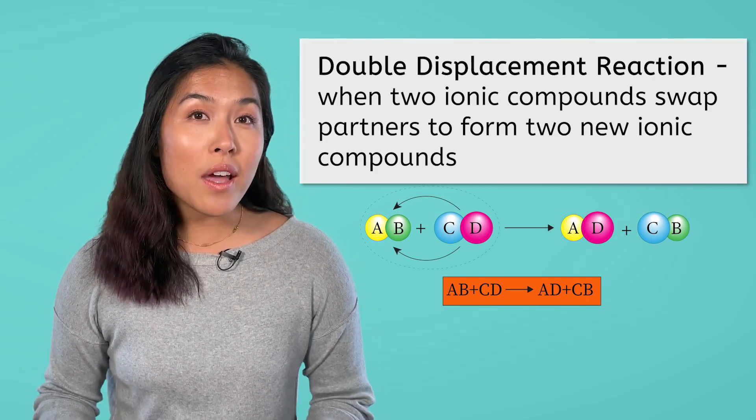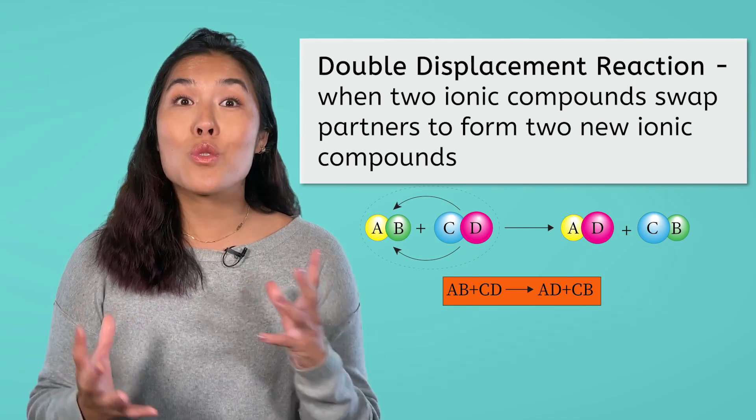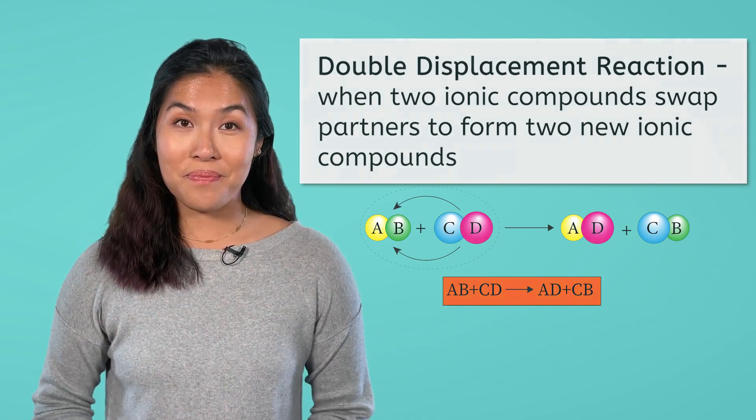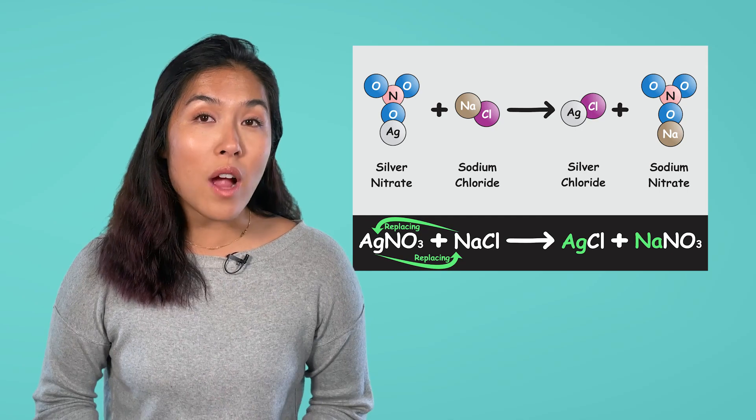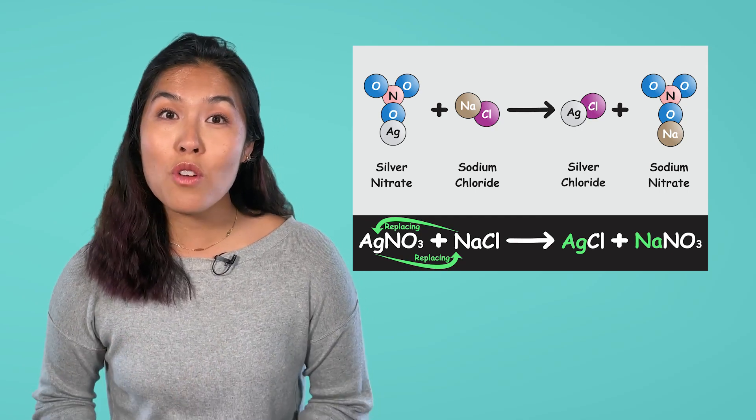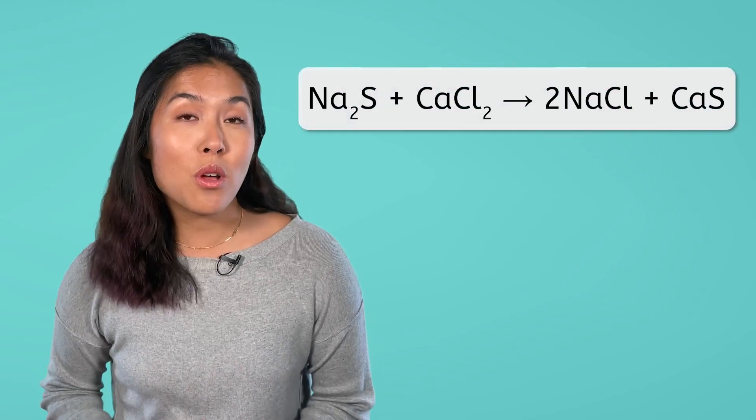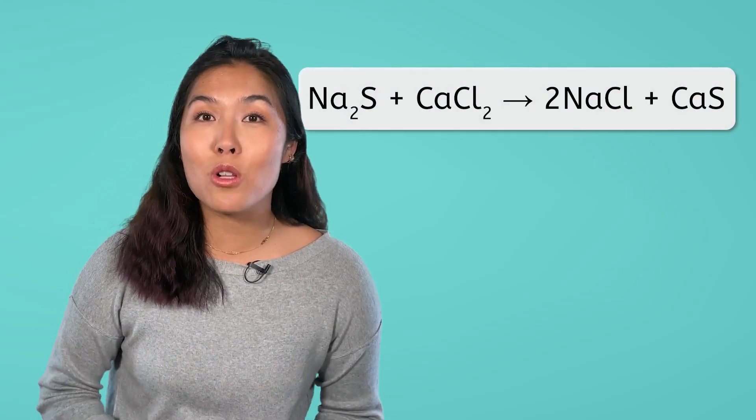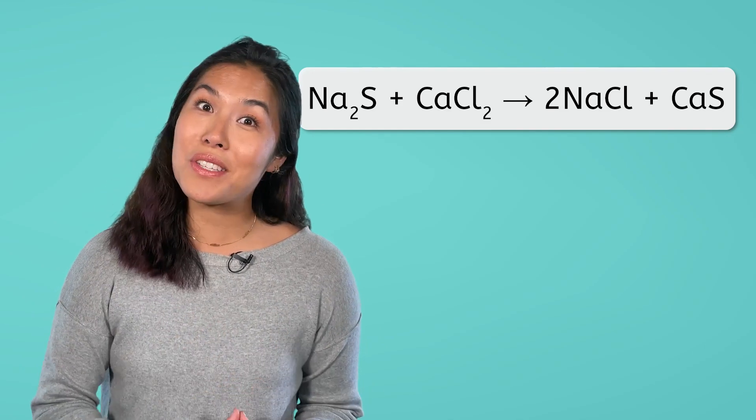Two examples of double displacement reactions are silver nitrate reacting with sodium chloride to form silver chloride and sodium nitrate, and sodium sulfide reacting with calcium chloride to form sodium chloride and calcium sulfide.